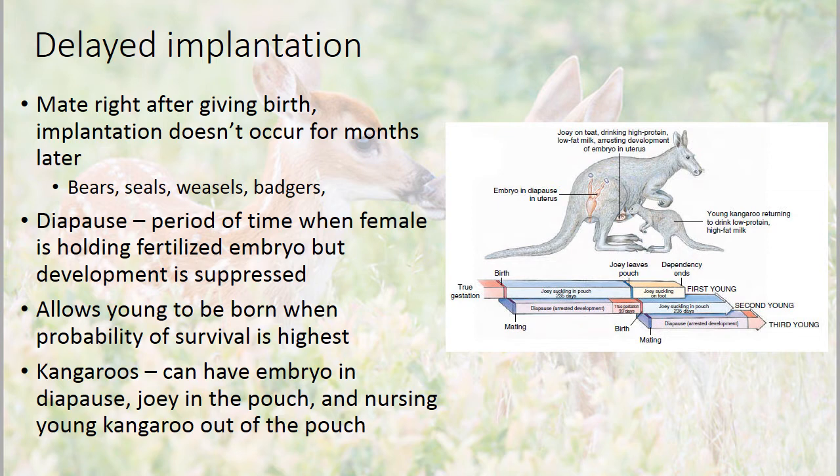Kangaroos can actually have an embryo in their uterus in diapause, a joey in the pouch latched on, and also a nursing young kangaroo out of the pouch that still comes back to nurse. So some mammals have different developmental stages of young all at the same time.